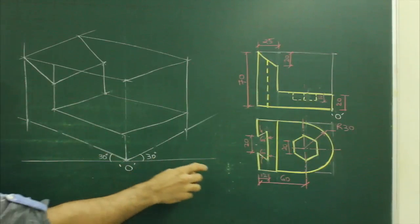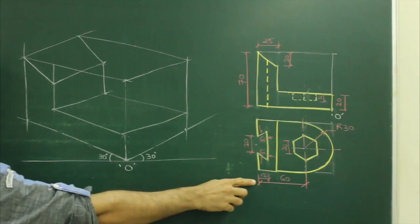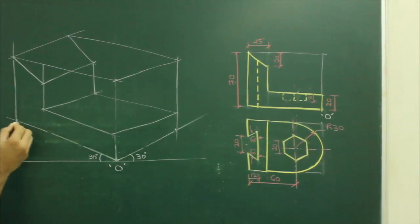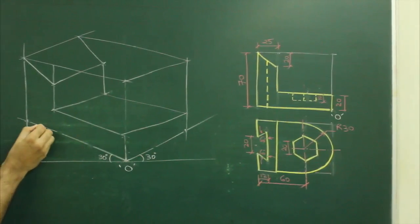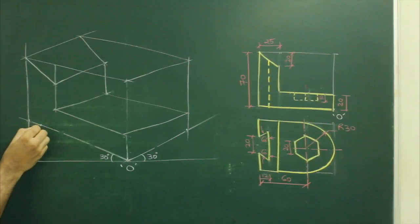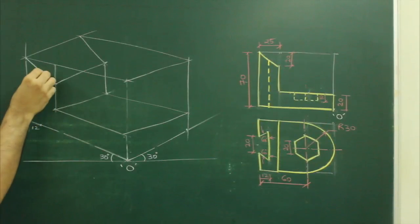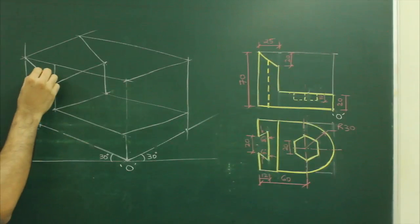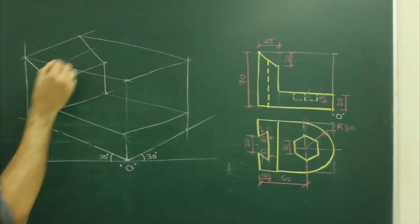If you see this, we have given 12. So what we need to do — we need to mark 12 on this side. Go up and draw the length.